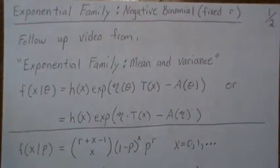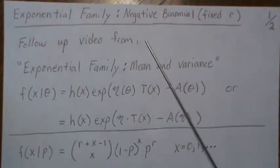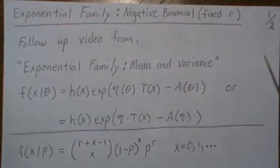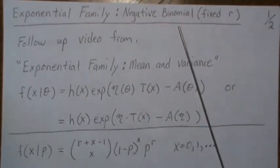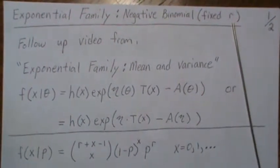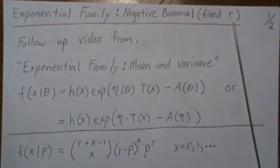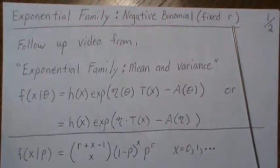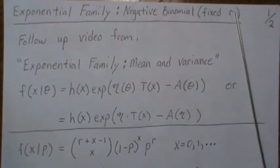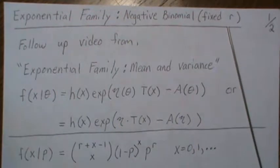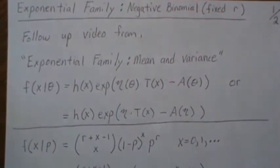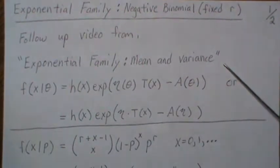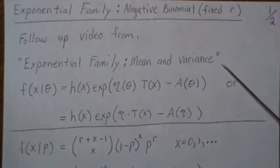Hello, in this video we're going to look at the exponential family and specifically the negative binomial within the exponential family. Now the only way the negative binomial fits into the exponential family is if we fix r, where r is the given number of successes that we observe before we stop, or it could be the given number of failures before we stop. It depends how you look at the negative binomial. And this is a follow-up video from that where we looked at the mean and the variance of an exponential family generically.